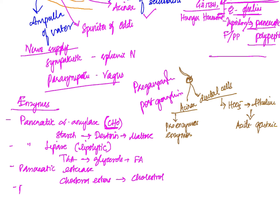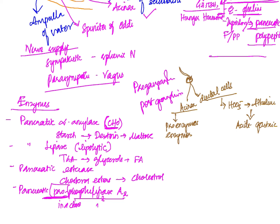The next enzyme is prophospholipase A2, which is an inactive form. It gets converted to phospholipase A2 by the action of trypsin. This active form splits lecithin into lysolecithin. Lysolecithin can damage cell walls.